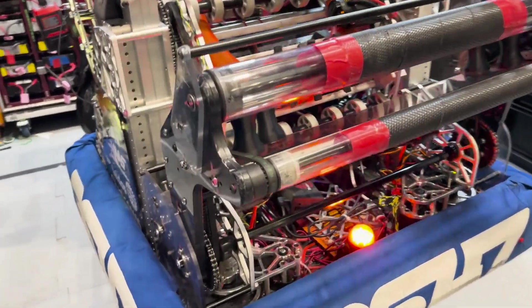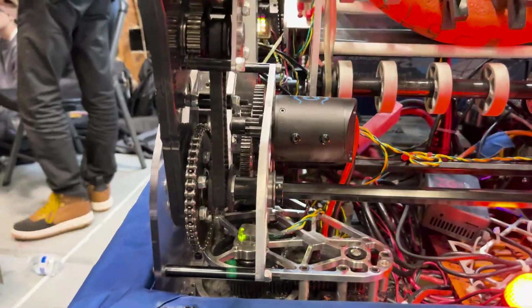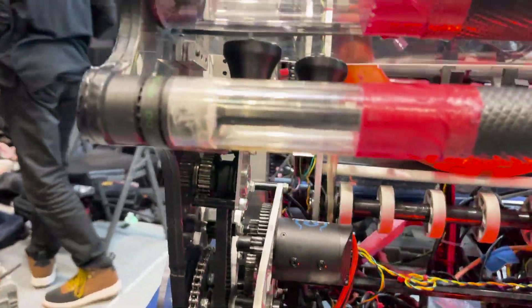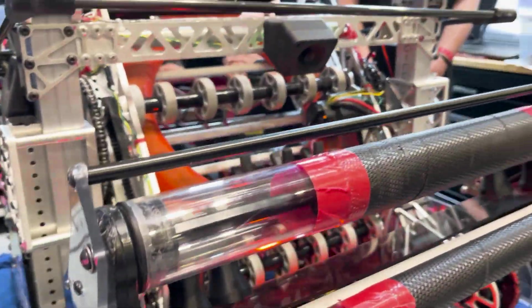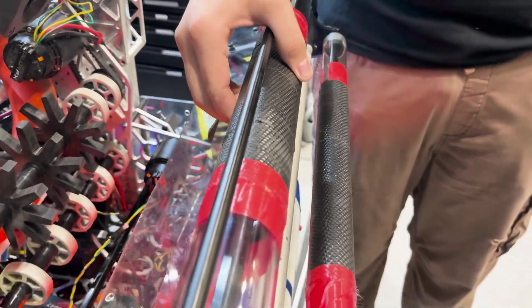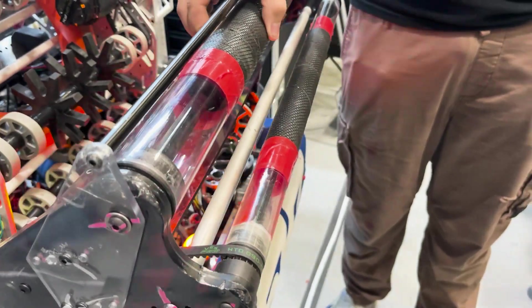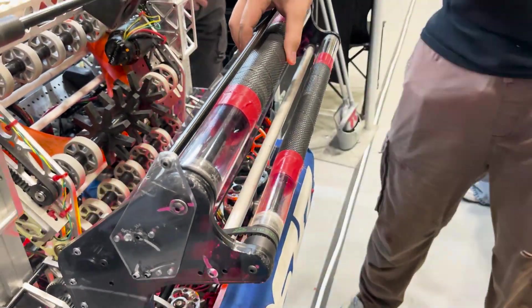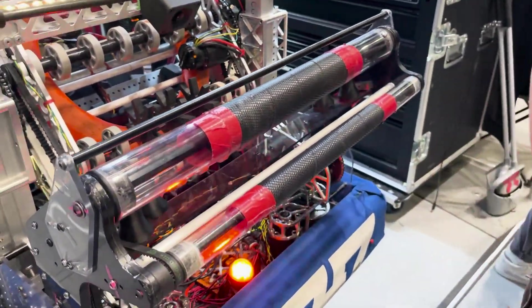We were also worried about damaging our under the bumper drive chain tubes. Basically because aluminum wall tubing is much harder to replace than this eighth inch polycarb. So although this is out there and vulnerable, it's much easier to swap out than a bent piece of aluminum.